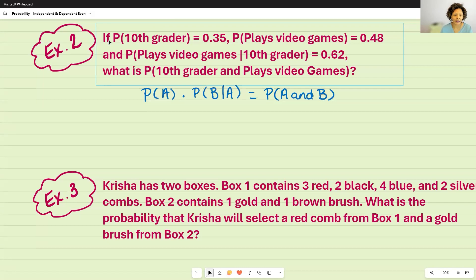This is the 10th graders because it says if, I know that's the one that's going to be in the denominator. So 0.35 times the probability of B given that A has happened. And so that was this one. It's given an information here. So 0.62.